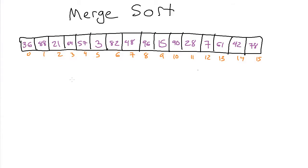Here we have an array of unsorted data, and we're going to talk about how the merge sort algorithm works to sort it. It's quite different from bubble sort. The recursive idea is actually kind of simple, and this algorithm shares some DNA with binary search in that it's based on splitting things in half. With merge sort, we split the array clean in half — in this case, it splits nicely because it's size 16, giving us eight on the left and eight on the right.